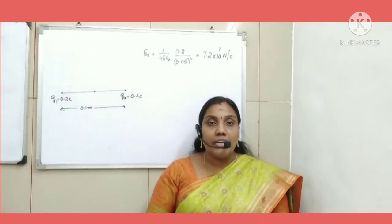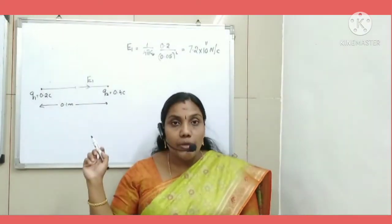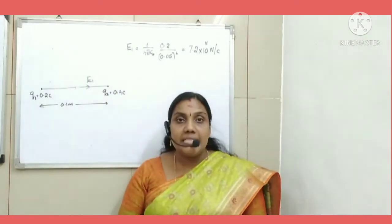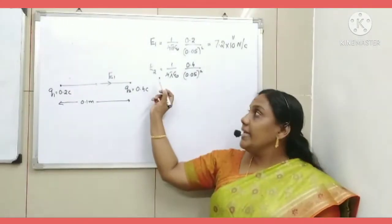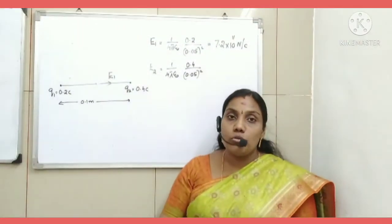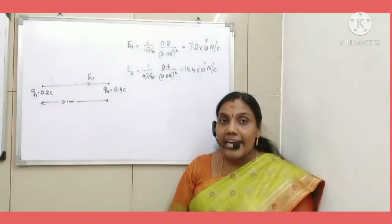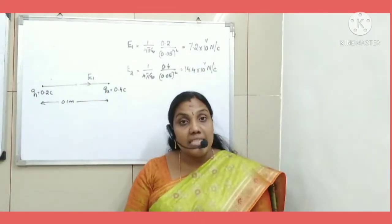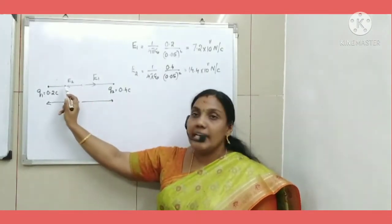The direction of E1: if we place a unit positive charge at the center, due to Q1 it repels away — so the direction of E1 is towards the right. Now, the electric field at the midpoint due to Q2 is E2 = 1/(4πε₀) × 0.4/(0.05)², which simplifies to 14.4 × 10¹¹ N/C. The direction of E2: again placing a unit positive charge at the center, due to Q2 it repels away — so the direction of E2 is towards the left.